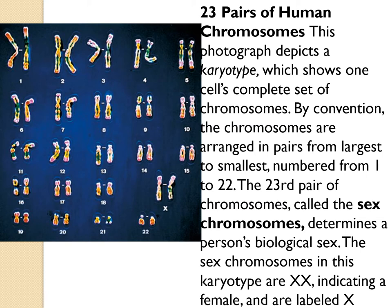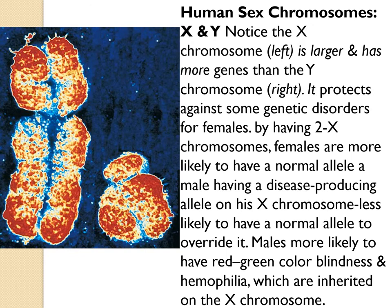You have 23 chromosomes from your mother and 23 from your father, making 46 total. The very last chromosome pair determines sex: XX is female, XY is male. The Y chromosome is much smaller than the X chromosome.